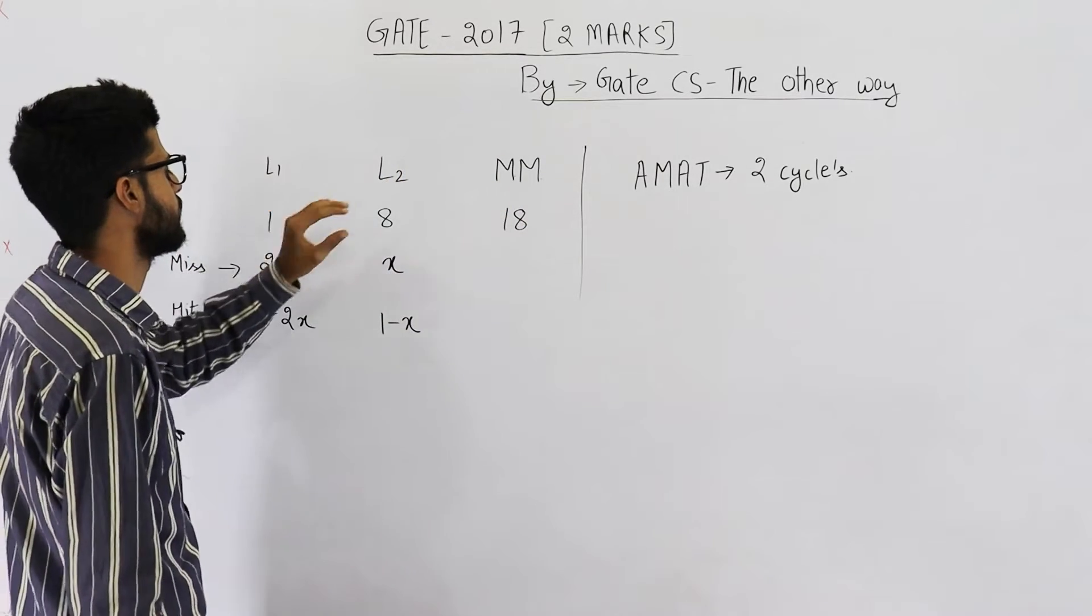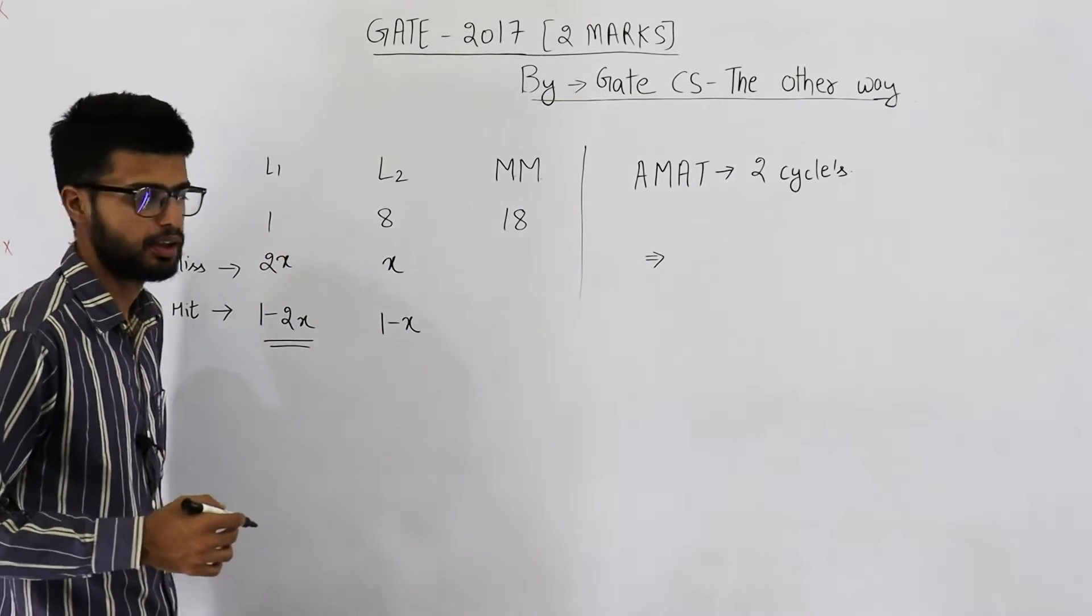So, now, they are saying average memory access time in cycles is 2 cycles. This is 1 cycle, 8 cycles and 18 cycles. Now, let's find out the formula for AMAT. In case of hit in L1, the hit rate is 1 minus 2x. So, we will spend only 1 cycle in accessing the memory. So, 1 minus 2x, for these many times, only 1 cycle is used. But when there is a miss in L1, that means 2x because miss rate of L1 is 2x.